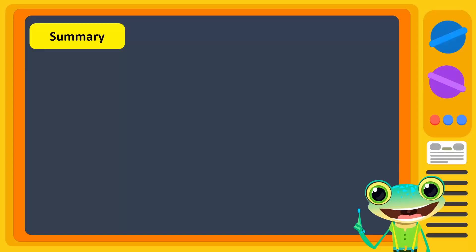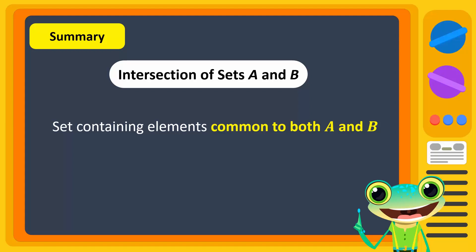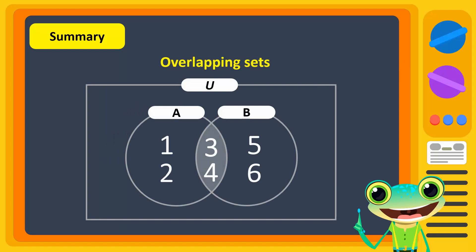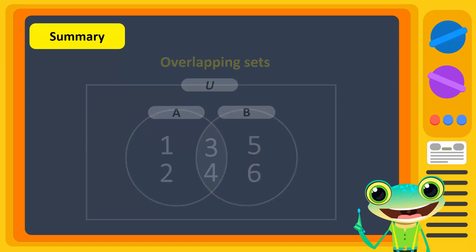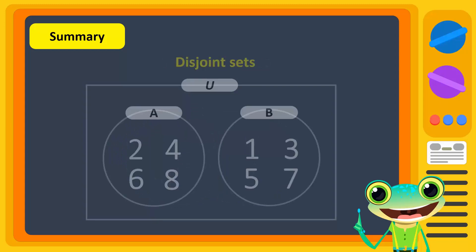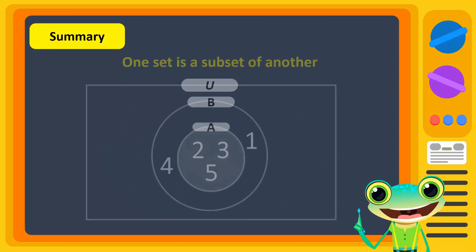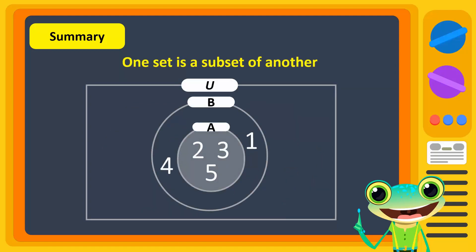In summary, the intersection of sets A and B is the set that contains the elements that are common to both A and B. When two sets are overlapping, we shade the overlapping region. When two sets are disjoint, we do not shade any region. When one set is a subset of another, we shade the smaller circle.